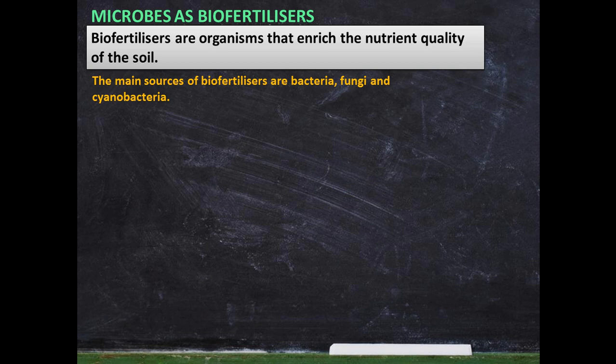The main sources of bio fertilizers are bacteria, fungi, and cyanobacteria. Bacteria are capable of fixing atmospheric nitrogen. Similarly, cyanobacteria are also able to fix atmospheric nitrogen. Fungi are able to absorb phosphorus from the soil. These two points you need to remember very clearly.